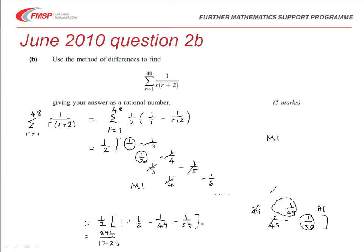Obtaining this summation, or the sum in this bracket here at the end rather, the half (1 + 1/2 - 1/49 - 1/50), that will give you one mark.